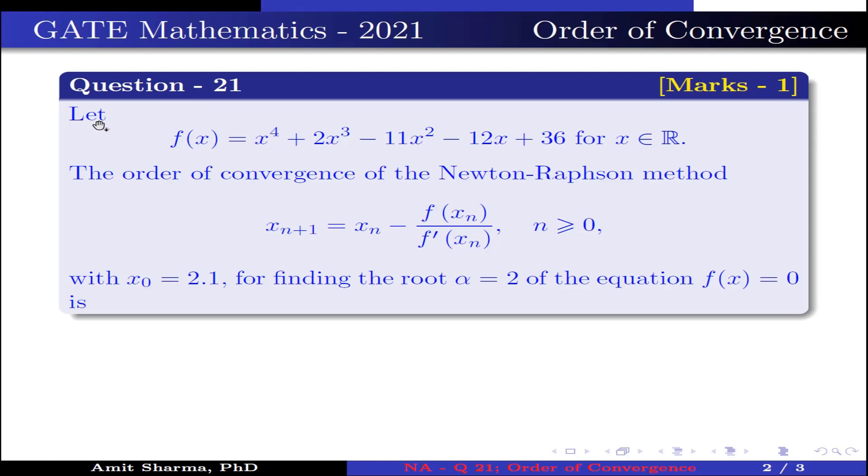Question is: Let f(x) = x^4 + 2x^3 - 11x^2 - 12x + 36 for all x belongs to R. The order of convergence of Newton-Raphson method x_{n+1} = x_n - f(x_n)/f'(x_n), where n ≥ 0 with x_0 = 2.1, for finding the root α = 2 of the equation f(x) = 0 is.